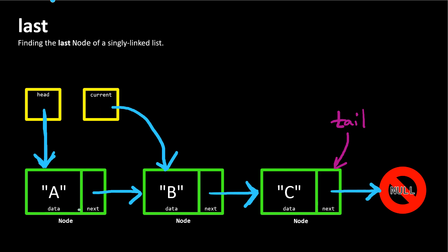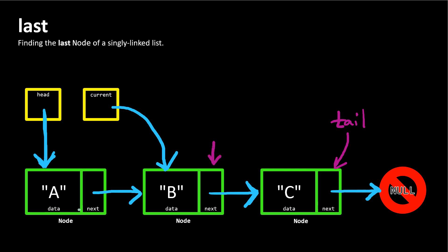Now we've got a reference to the second node in our list. Current is here, and we have to make that exact same check again. Is the next property of our current node null? In this case, no — it is not null because there is a node that it refers to. So because the next property is not null, we'll take the current contents of the next property and assign that to be what current refers to. Rather than current referring to the second node, it's going to refer to the third node.